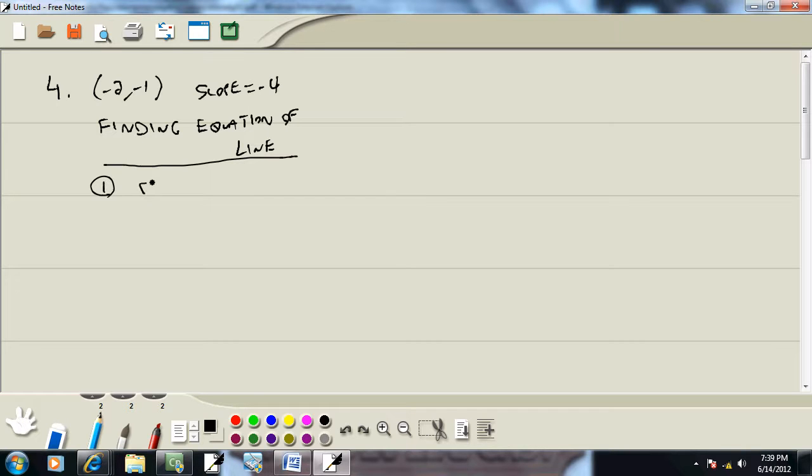Now, our first step to finding the equation of a line is find m. Now, this one is pretty straightforward. They give us m. They tell us slope is negative 4.